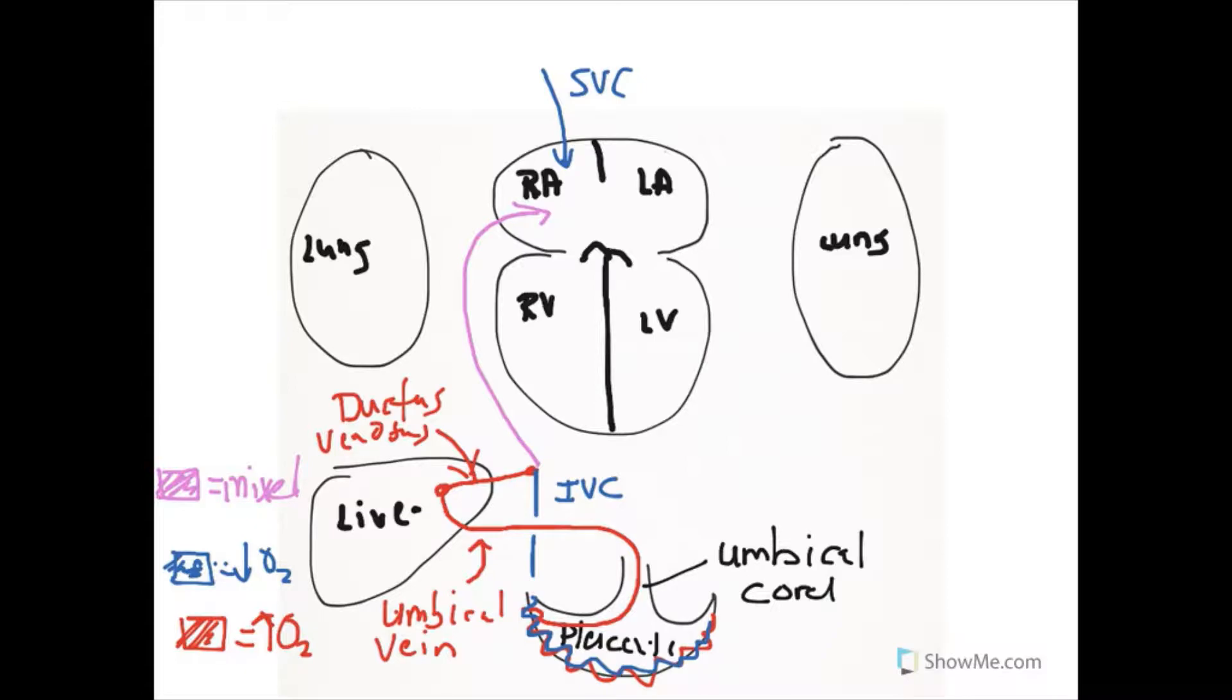This mixed blood in the right atrium has two possibilities. If you're familiar with normal circulation, then you know what's going to happen. This blood can pass through the tricuspid valve into the right ventricle.